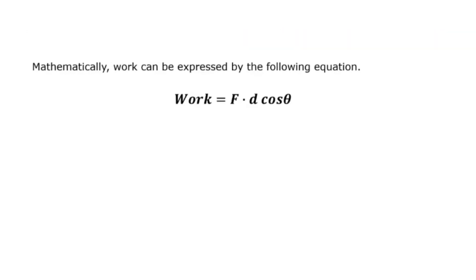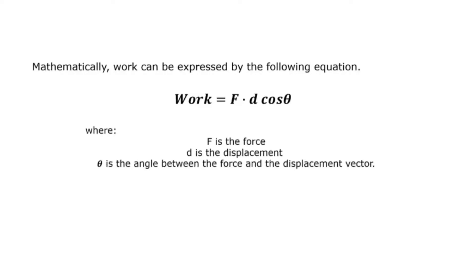Mathematically, work can be expressed by the following equation: work equals F times d times cosine theta, where F is the force, d is the displacement, and the angle theta is defined as the angle between the force and the displacement vector.